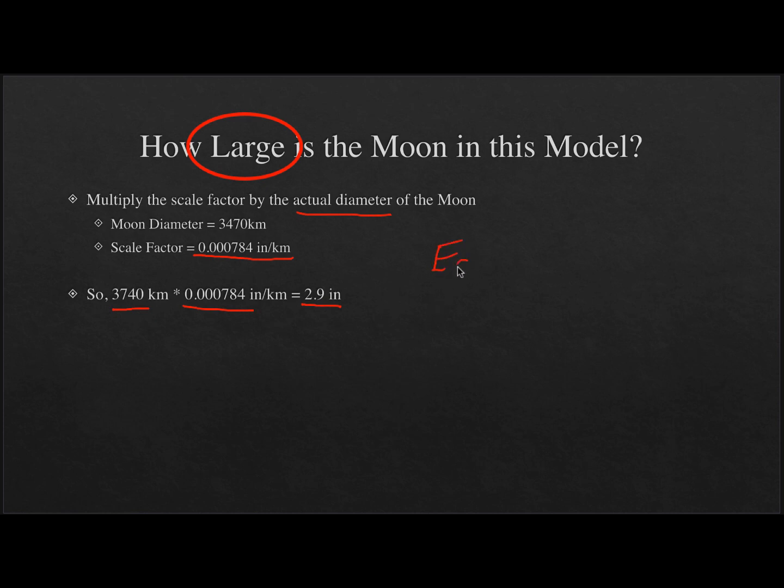Now once we find the scale factor, we can then use that to create our scale model. We want to look at how large is the moon going to be in this model. What we need in that case, we need the actual diameter of the moon, so we need to know how big the moon is in real life. We multiply it by that scale factor that we determined in the previous step. In this case, the moon's diameter is 3,740 kilometers, our scale factor that was previously determined. And if we multiply those two, we'd find that to scale, the moon would be 2.9 inches.